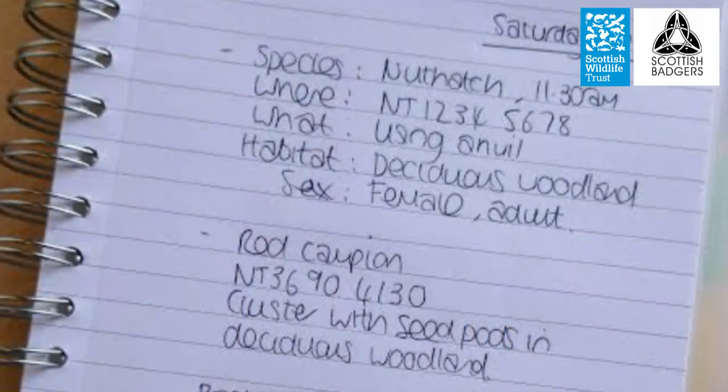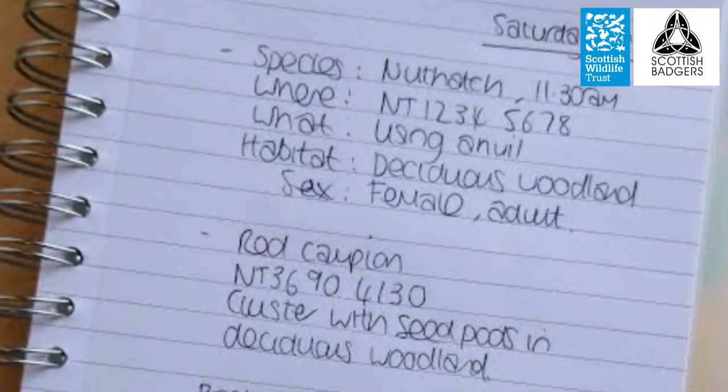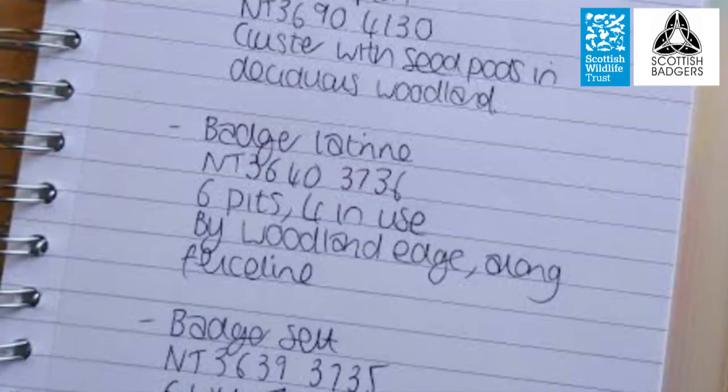Biological recording can simply be a note in a notebook stating what you found, where you found it, the date, and any other relevant information such as the weather conditions or surrounding habitat.